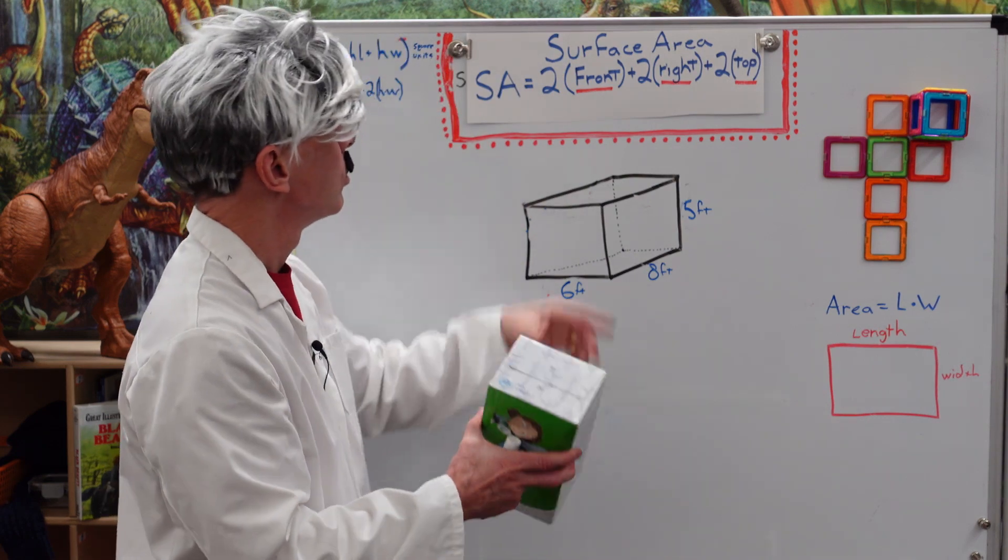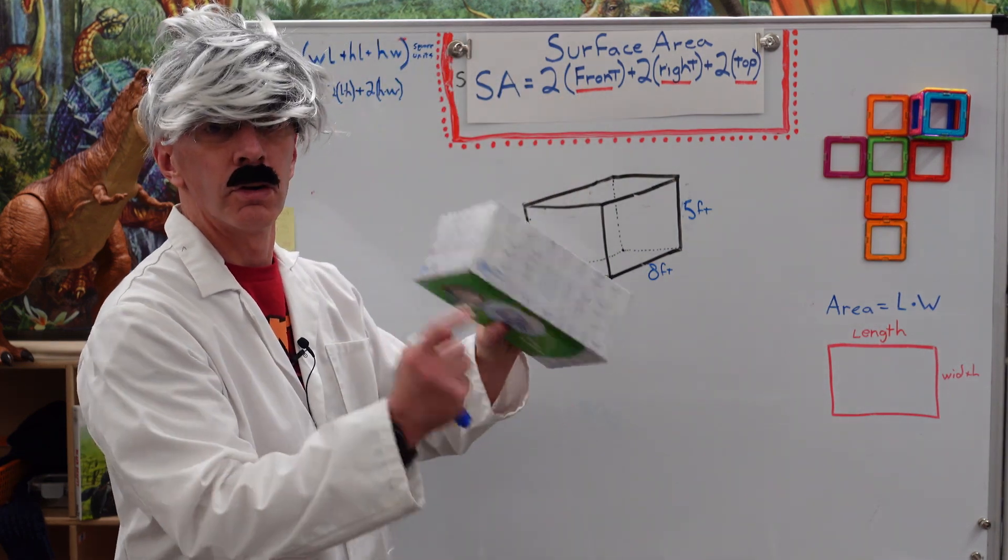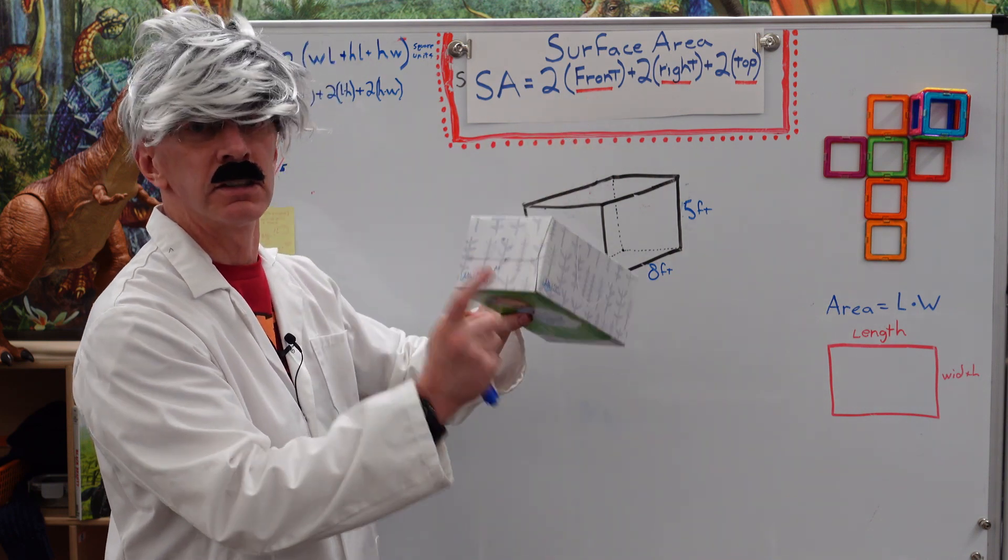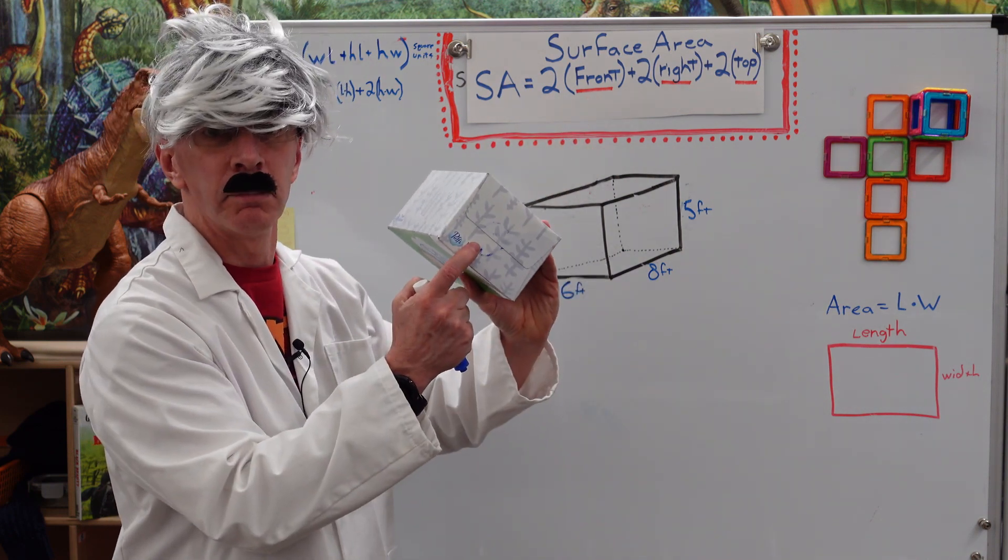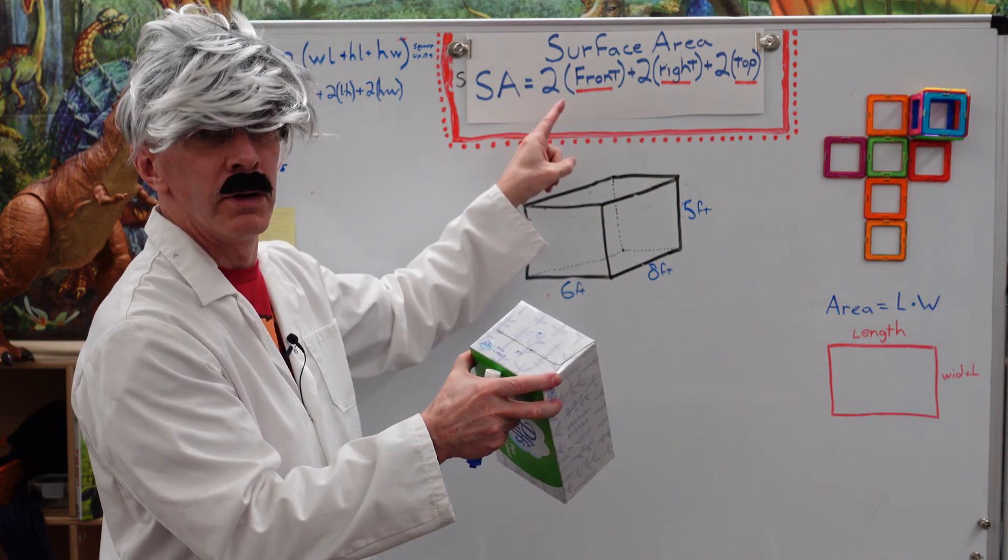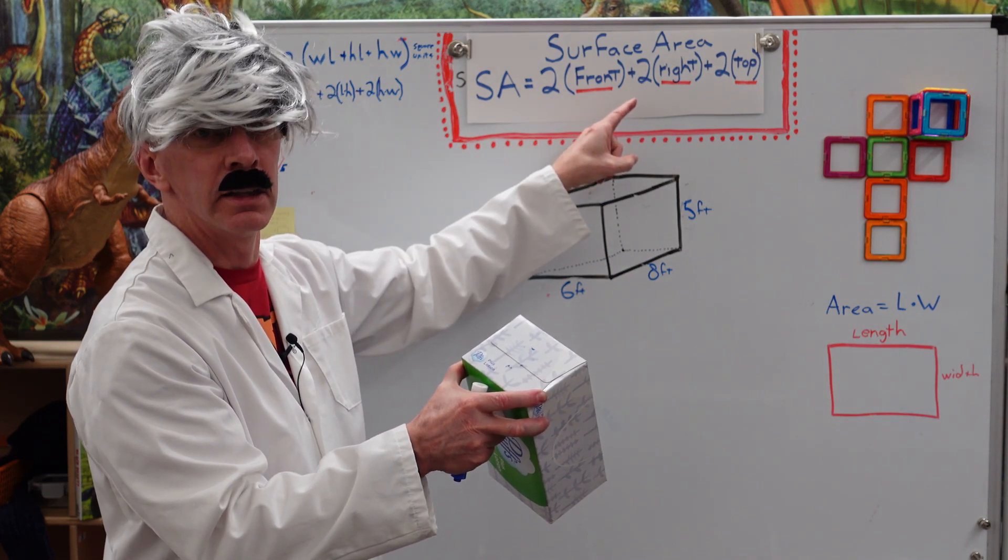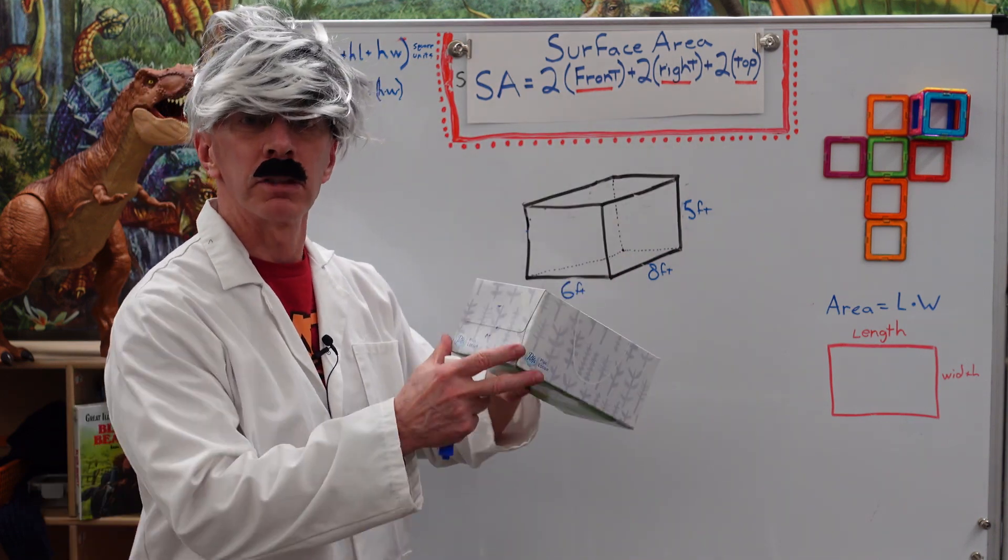Remember, you can choose the front or the back. We will choose the front. So, if we find the area of the front, it is the same as the area in the back. That's why we multiply times 2. Same with the right and the left and the top and the bottom.